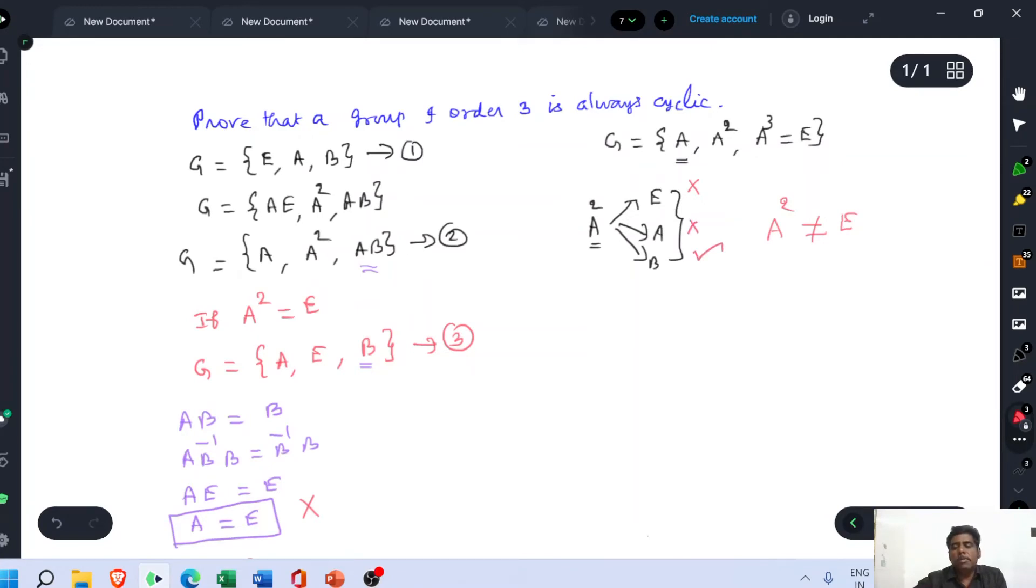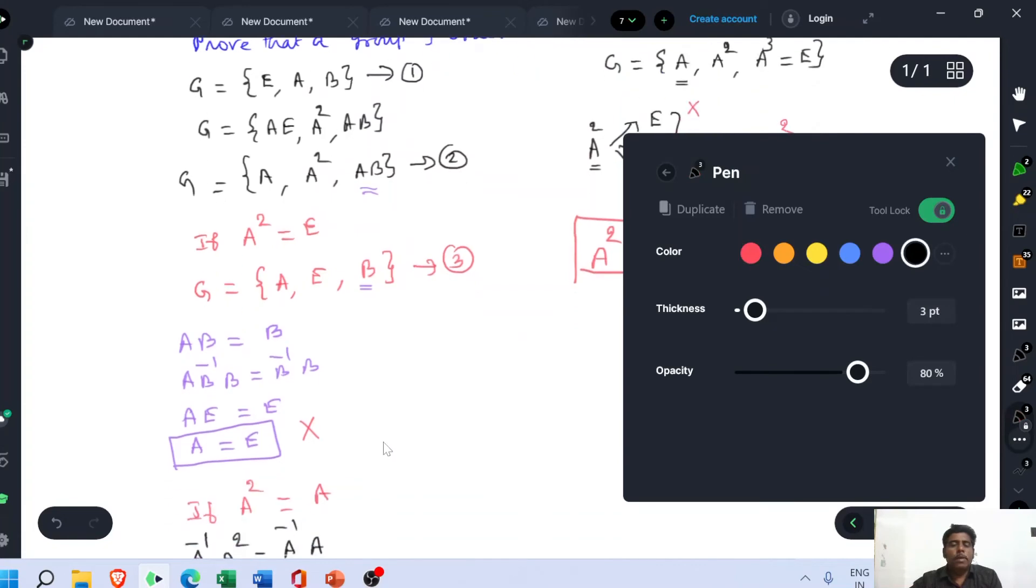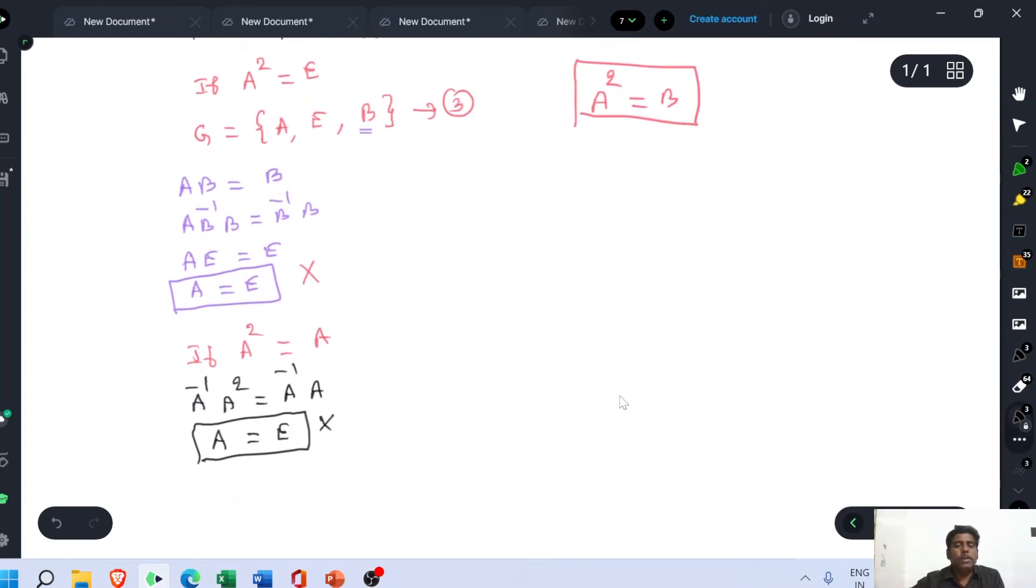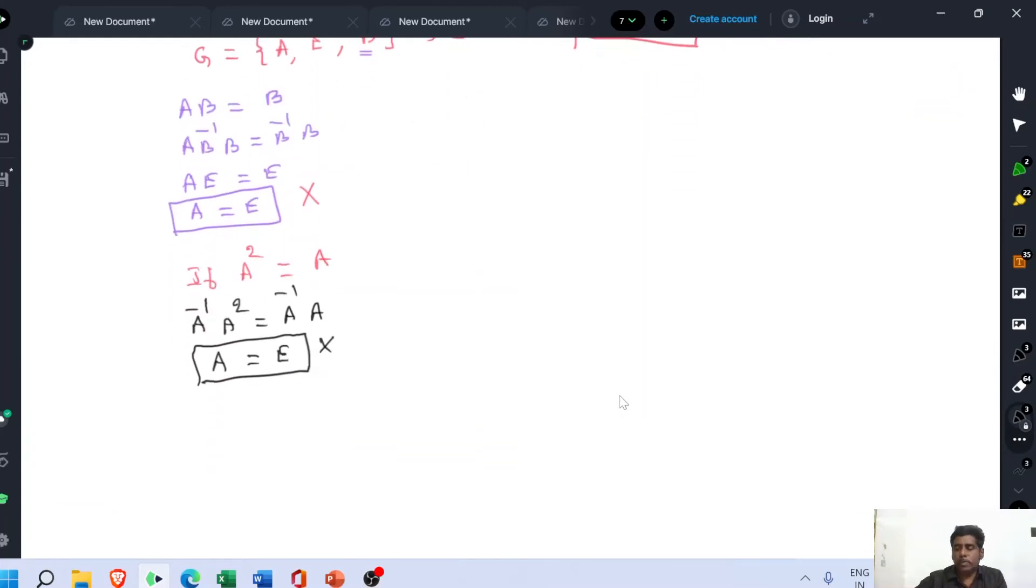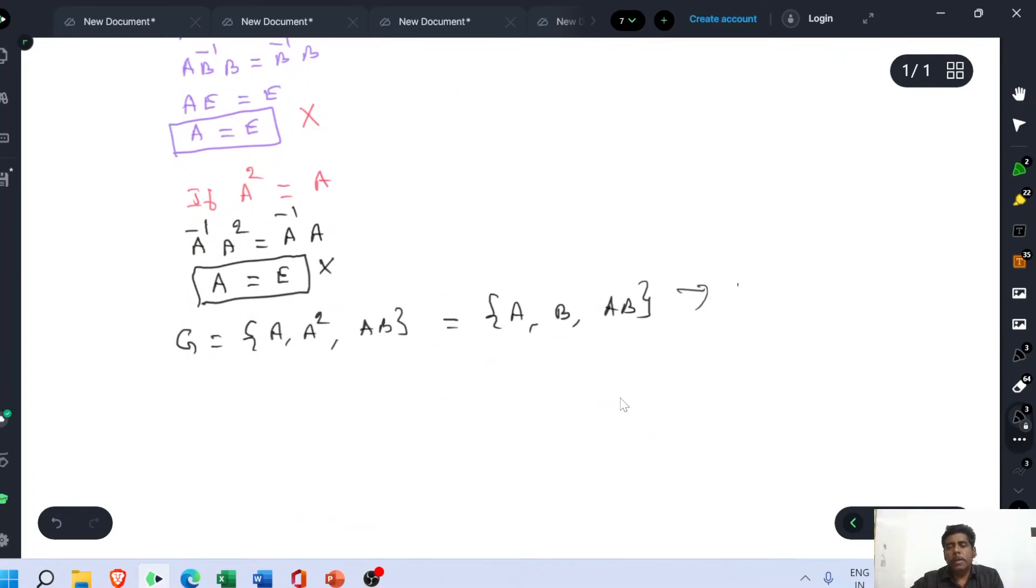Therefore, the acceptable value of A square is B. The value of A square could be B. Now consider equation 2. G equal to A, A square, AB. This is written as A, B, AB. This is equation number 4. Now compare this equation with our actual equation. G equal to E, A, B. Equation 1.